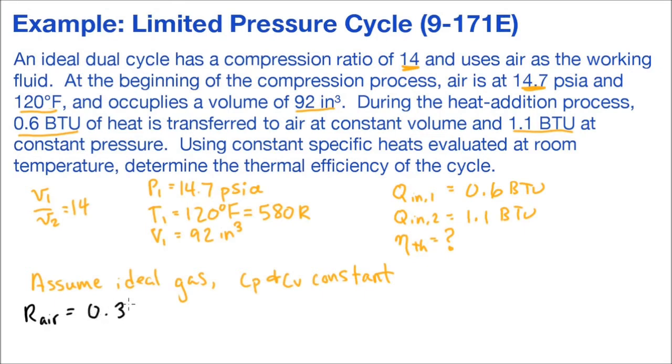So we look up the value of R, the ideal gas constant for air. It's 0.3704 psi cubic feet per pound mass Rankine. Now here we see our units are cubic feet, but we're given our volume in cubic inches, so we need to make sure we do the conversion.